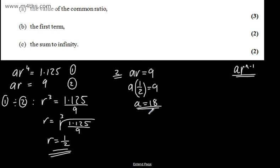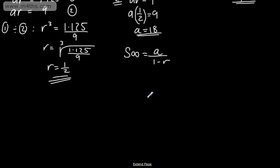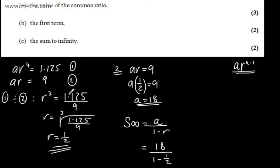In part C, we need the sum to infinity. The sum to infinity is given as A over 1 minus R. So this is going to give us A, which is 18, over 1 minus the ratio, which is 1.5. That's going to give me 18 over negative 0.5. 18 divided by negative 0.5 is going to give me negative 36. So the sum to infinity is 36.